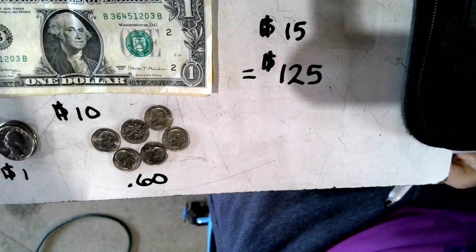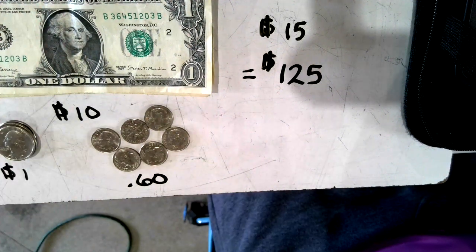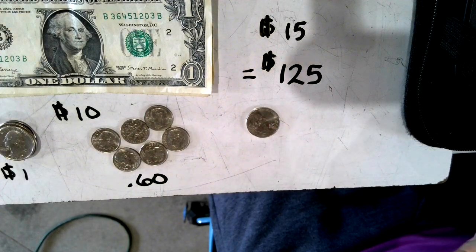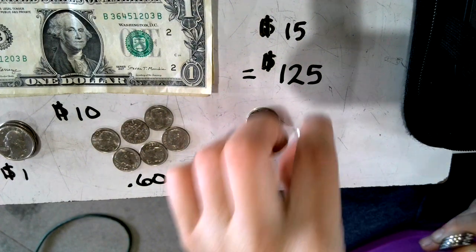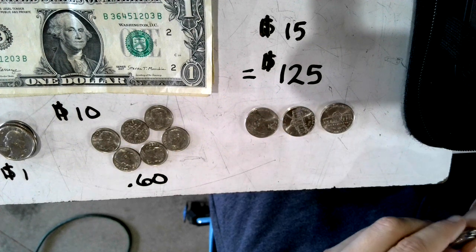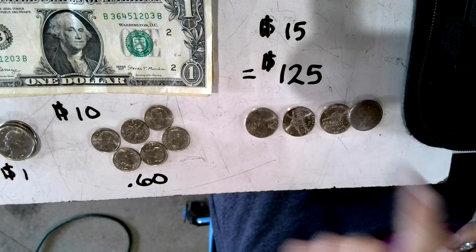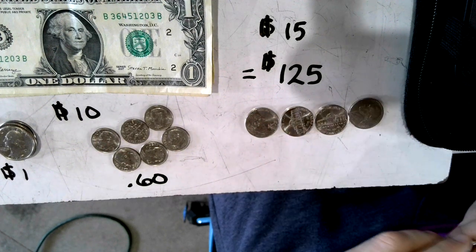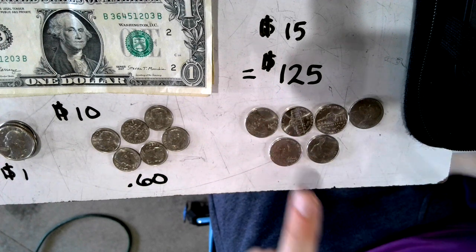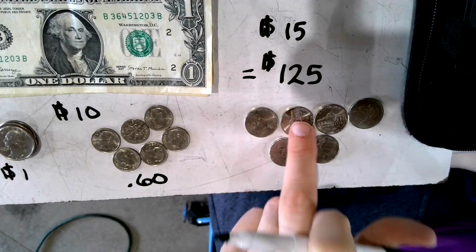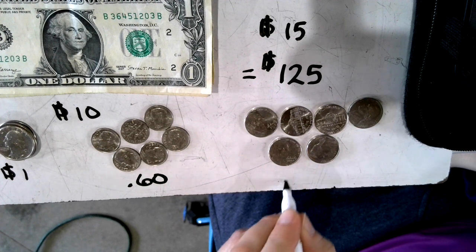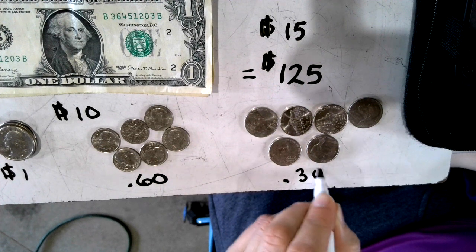Now we're going to look at nickels. Nickels are the five count. So: 5, 10, 15, 20, 25, 30. That's 30 cents in nickels.